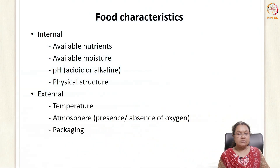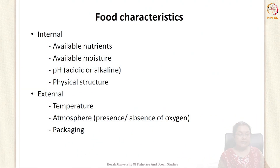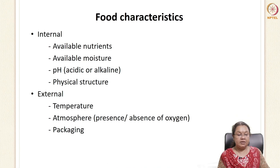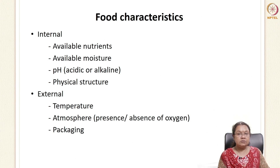Food characteristics are influenced by internal and external parameters. Internal parameters include nutrients, moisture, pH, and physical structure. External parameters include temperature, atmosphere — that is, presence and absence of oxygen — and packaging. These characteristics determine the shelf life and the preservation methodologies that need to be adopted, and based on this, we choose the packaging materials.